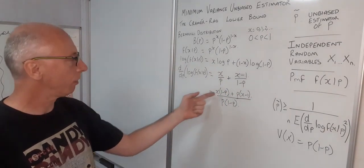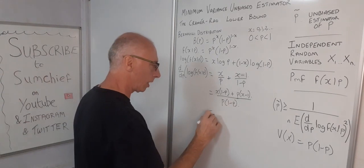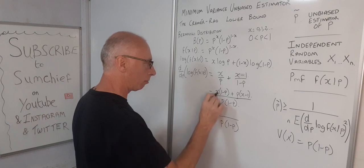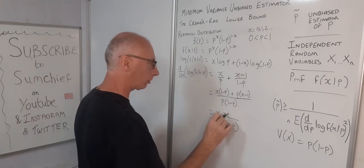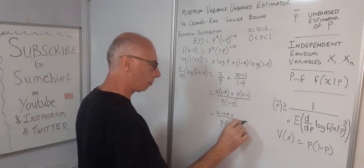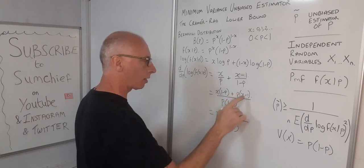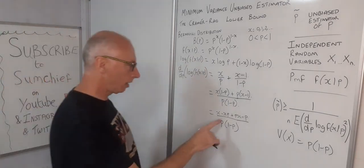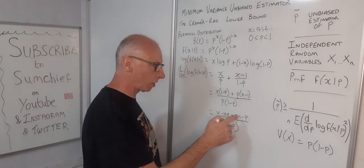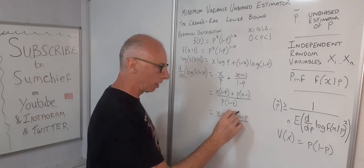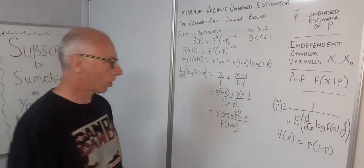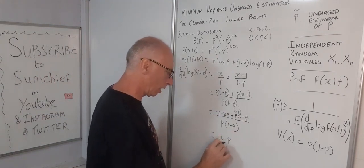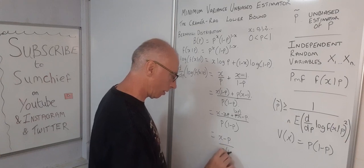Let's expand this out. We get X minus XP plus PX, and then P times minus 1 gives minus P. Notice that minus XP and plus PX cancel each other out, so we're left with X minus P over P times 1 minus P.